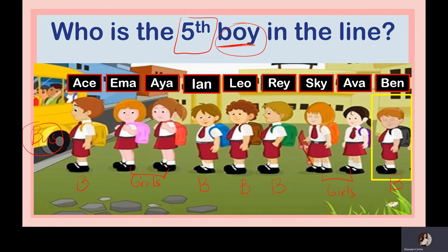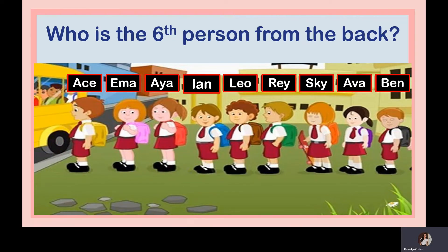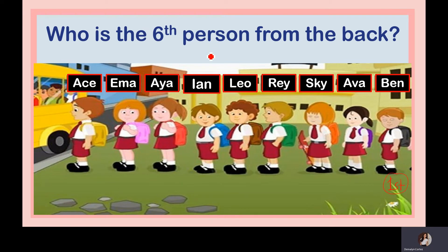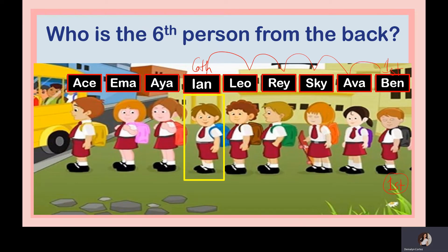Next: Who is the sixth person from the back? The bus is at the front, so the back is the opposite end. There is no specific gender — it's any person. Counting from the back: first, second, third, fourth, fifth, and sixth. So Ian is the sixth person from the back.